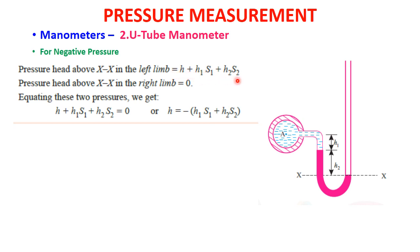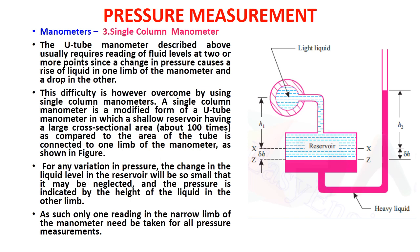For vacuum pressure, the pressure head above XX in the left limb is h + h1·s1 + h2·s2, because both fluids are present in the left limb. The pressure head above XX in the right limb is zero, as there is no fluid above the datum line in the second limb. Equating: h + h1·s1 + h2·s2 = 0, giving h = −(h1·s1 + h2·s2). This is the equation for calculating vacuum (negative) pressure.